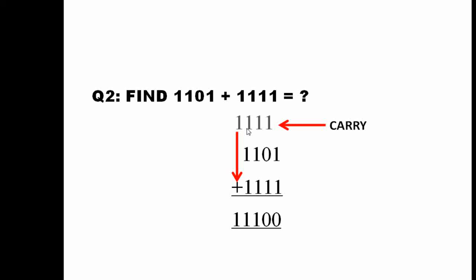Now you are sorting out the fourth column. Fourth column says 1 as carry, again 1, again 1 and here also 1. So three 1s you have. Answer is 1 and a carry of 1.